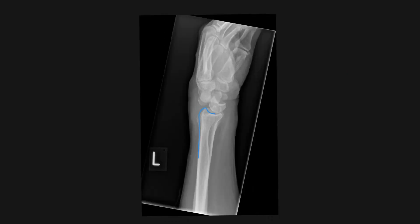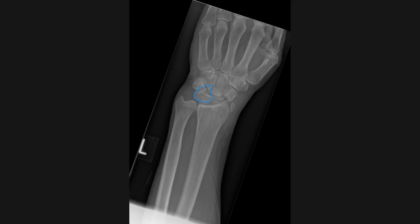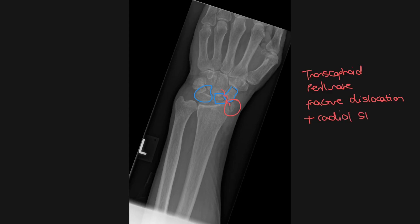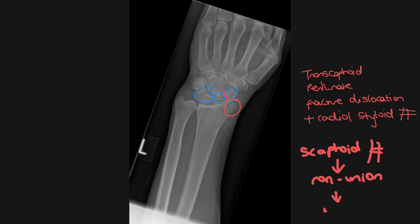In this next example the distal radius lines up again with the lunate and the capitate is out of line, again in keeping with a perilunate dislocation. However when we look at the PA film we can see additional injuries: there is a fracture through the waist of the scaphoid and also a fracture through the radial styloid. Fractures of the scaphoid are very important to pick up because they are the most common carpal bone fracture, and also because of their distal blood supply they're prone to non-union and therefore prone to AVN, as is seen in this x-ray.